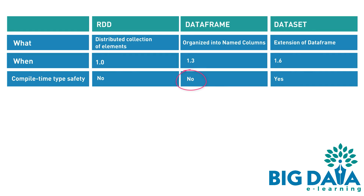Three: DataFrame doesn't provide compile-time type safety. For example, if you try to access a column from DataFrame which is not available, then it doesn't throw an error during compile time — it throws the error only when you try to execute the code. However, this is not the case with DataSet. DataSet throws the error as you type the wrong column name, which saves developer time and cost.